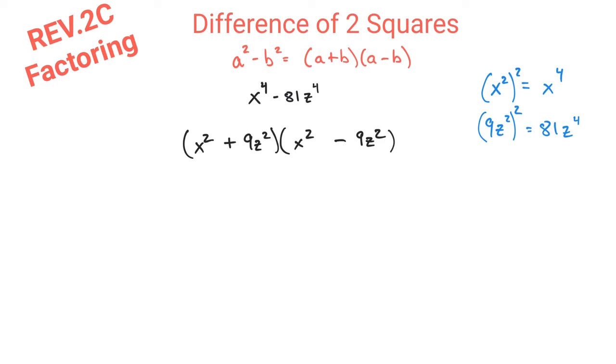Well, from here, we take a look and verify that we are, in fact, finished. If you have x^2 + 9z^2, that cannot be factored anymore because of that plus sign. There is no such thing as the sum of two squares factoring, only the difference.